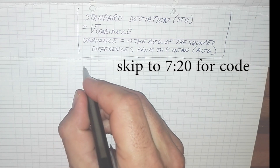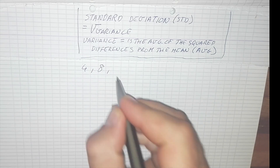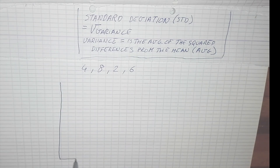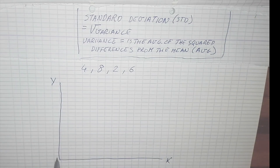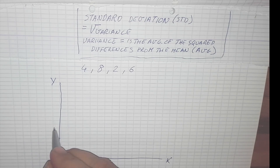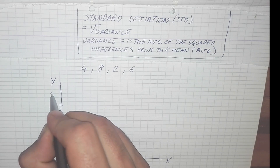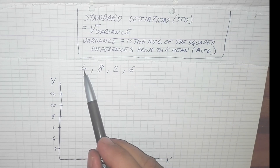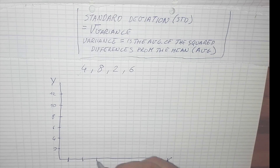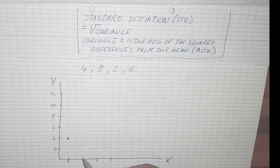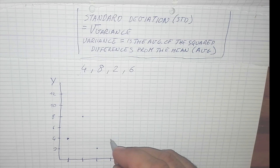So let's say we have the numbers 4, 8, 2, 6 — four numbers. We will plot them on a graph. So that's the x-axis, y-axis — doesn't matter. So let's say this is number 2, number 4, number 6, 8, 10, 12. So number 4 goes here. The second number is 8 which is here. The third number is 2 which is here. And the fourth number is 6 which is here.